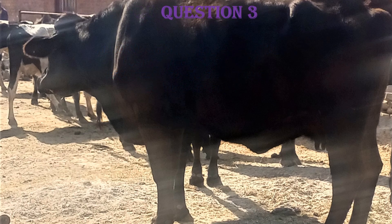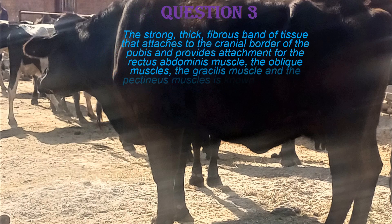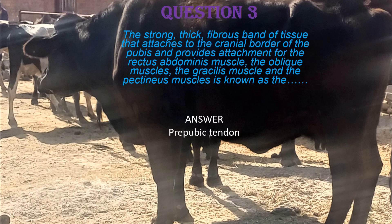Question three: the strong thick fibrous band of tissue that attaches to the cranial border of the pubis and provides attachment for the rectus abdominis muscle, the oblique muscles (external and internal abdominal oblique), the gracilis muscle, and the pectineus muscles is known as what? The answer is the prepubic tendon. The prepubic tendon is very important in anchoring several important muscles.